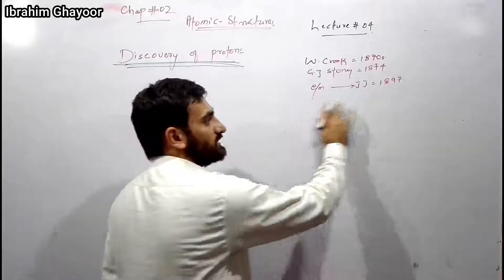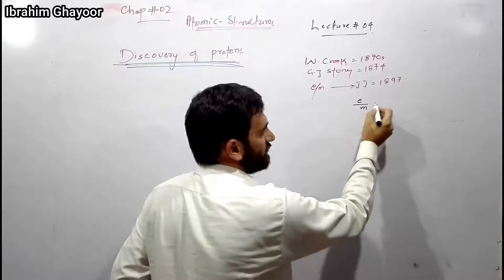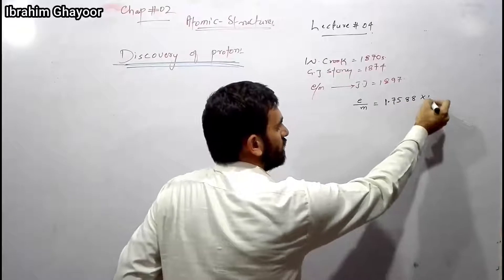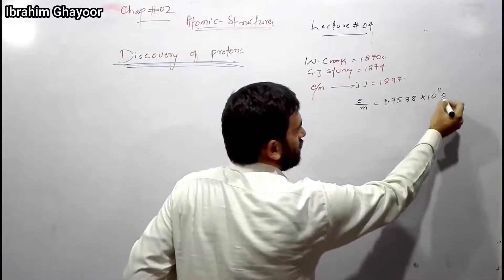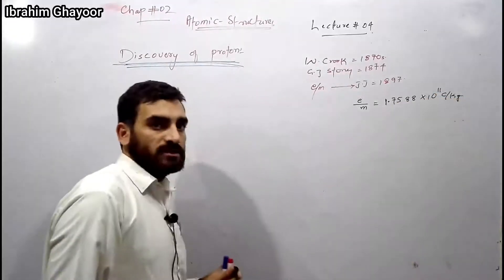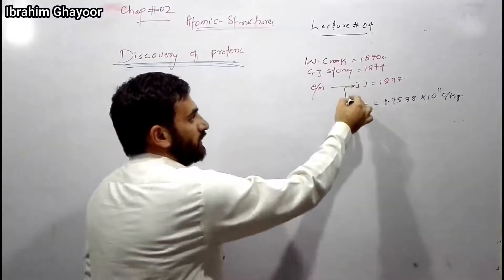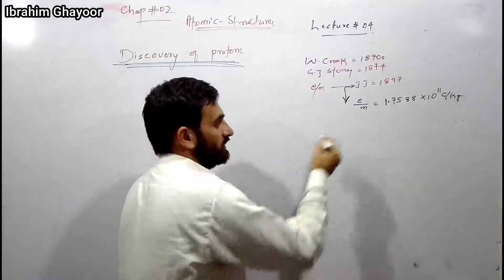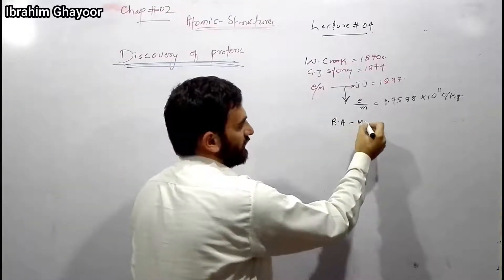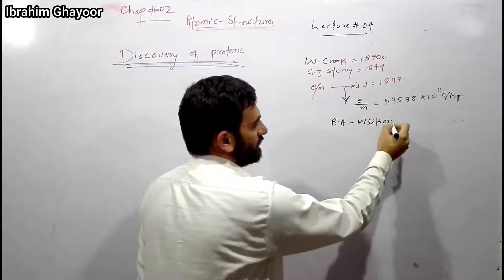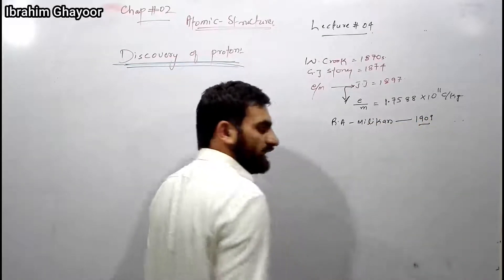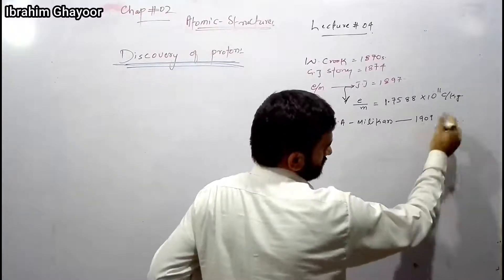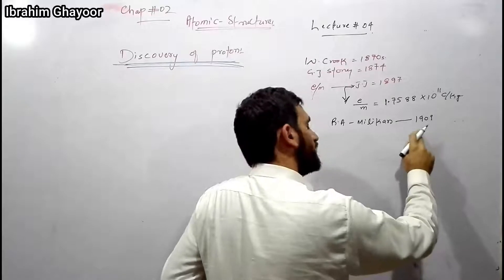Charles Tumas — that is, JJ Thomson — measured the charge-to-mass ratio of the electron as 1.75×10¹¹ coulombs per kilogram. That is the Charles Tumas value. How is the electron charge determined? It depends on the following experiment.